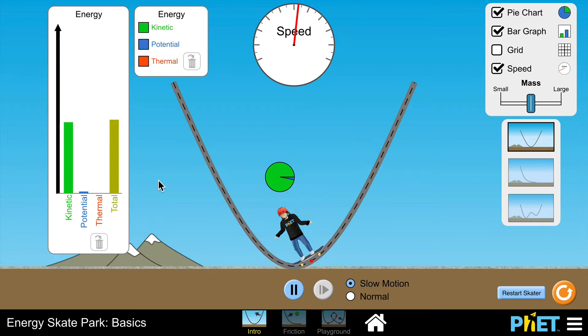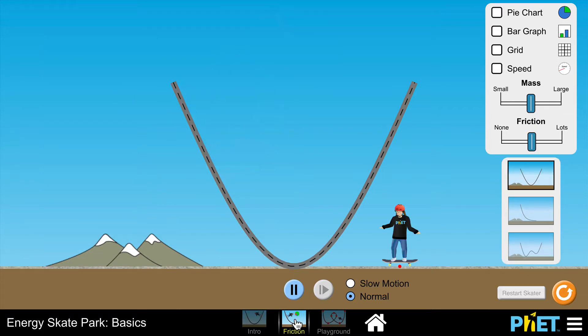Now the one thing to notice about this screen is this doesn't include friction, but it does in the second screen. So I'm going to go to that one, and in fact it's labeled friction. This time if I place this person here on the track and let them go, you'll see that they're not reaching the maximum height each time. Either side of the slope they're reaching a lower and lower height.